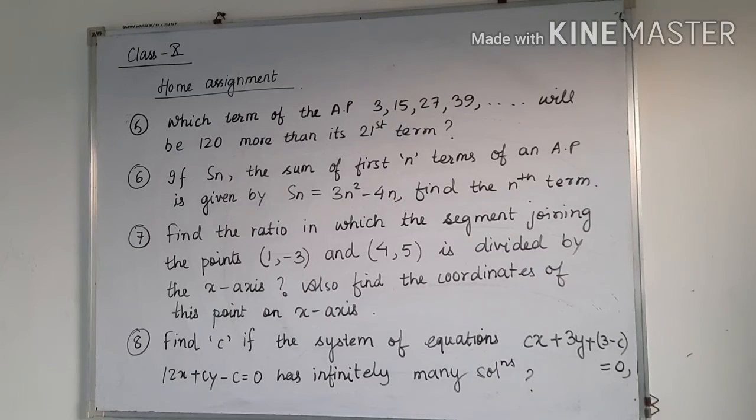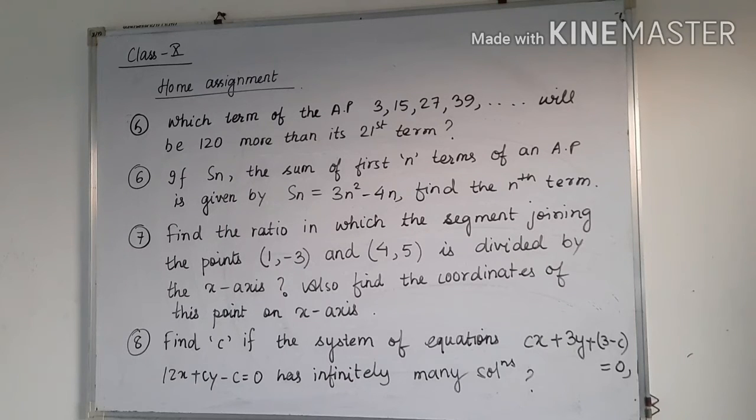Here is the next question, question number 5. Which term of the AP 3, 15, 27, 39 will be 120 more than its 21st term? Number 6 is if Sn, the sum of first n terms of an AP is given by Sn = 3n² - 4n, find the nth term.